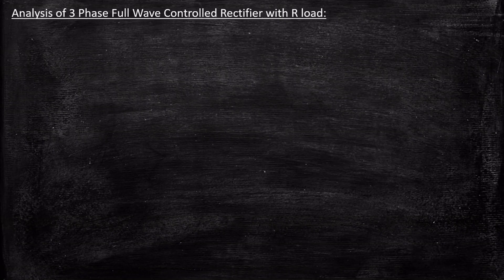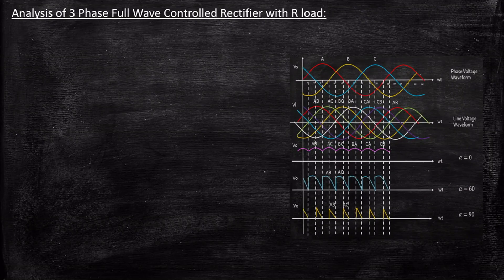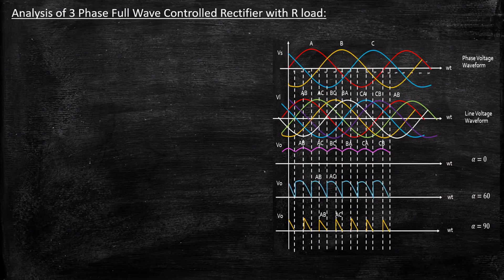Hello everyone. In this video we are going to take a look at the analysis of a three-phase full wave controlled rectifier with R-load. This is the waveform of the three-phase full wave controlled rectifier with R-load which we had analyzed in detail in the previous video. We are going to consider this waveform to derive the expression for average output voltage. This waveform is extremely important for considering the upper and lower limits and the total time period for deriving the average voltage expression.